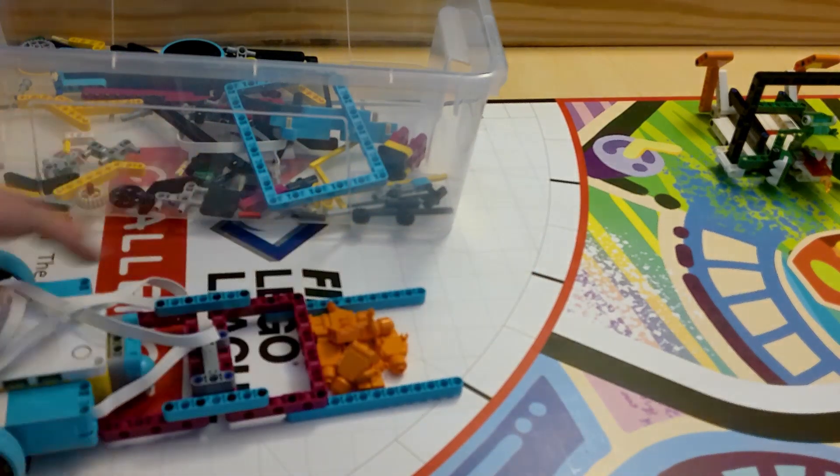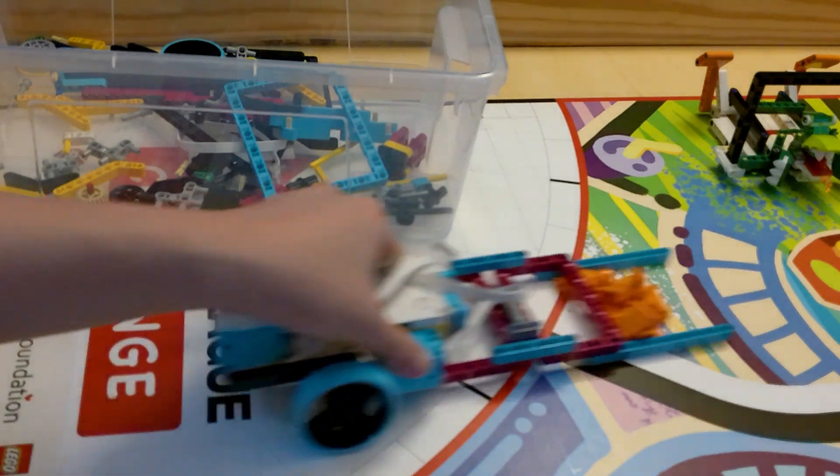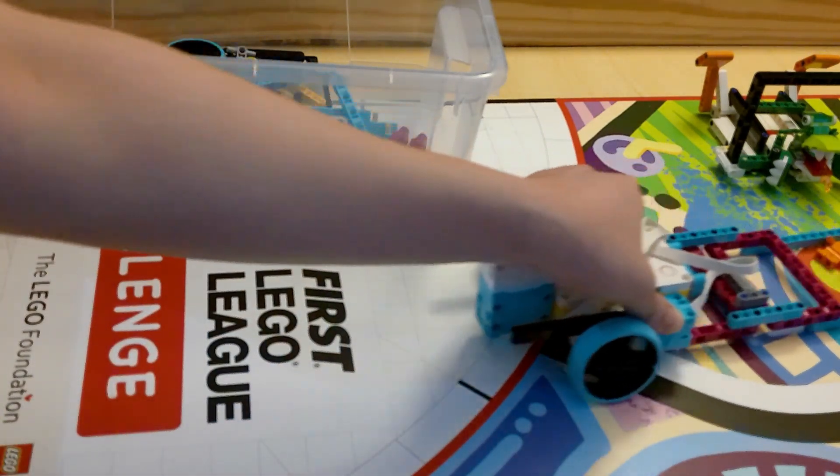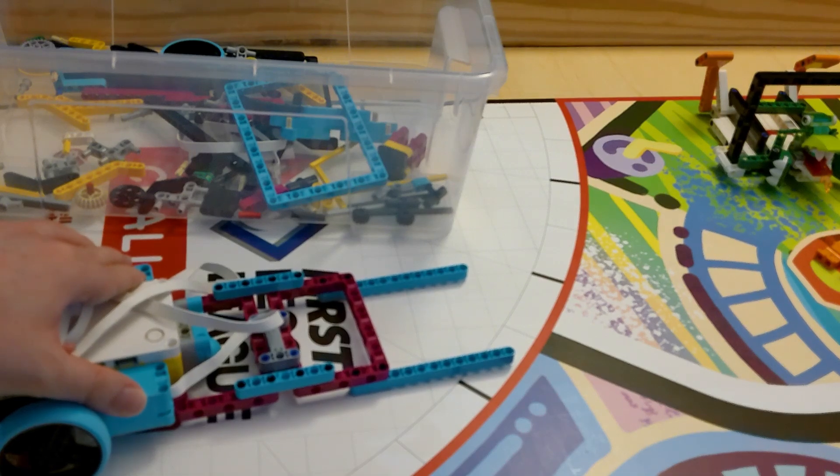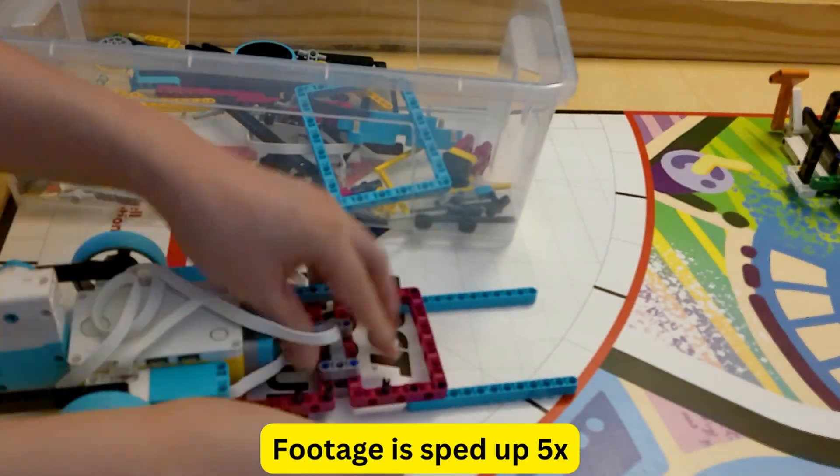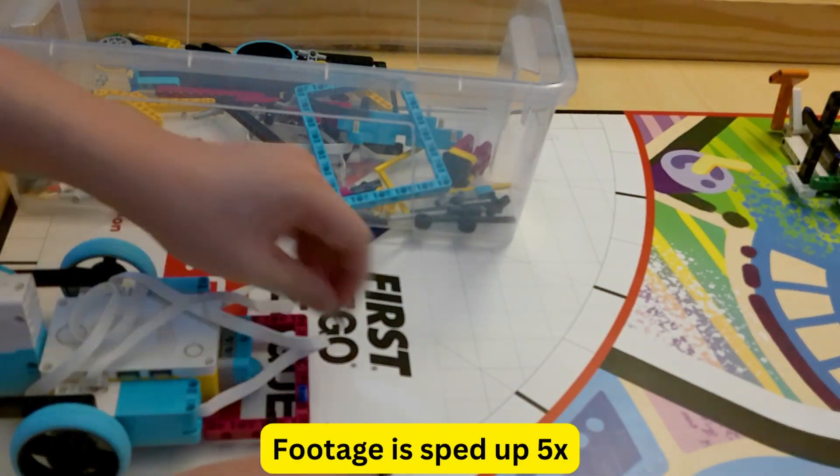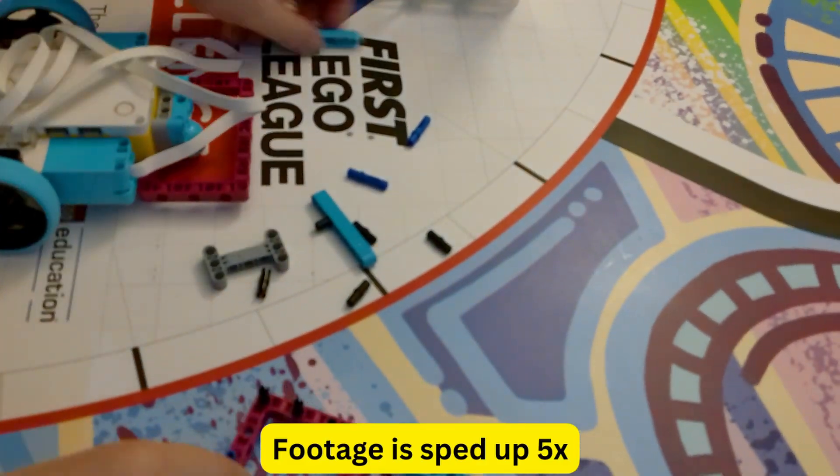I'm going to start with a mistake many teams do, and it's make a bridge that is too strong and too well attached to the robot. This kind of bridge is a problem because it can be difficult to put it on and take it off of the robot.